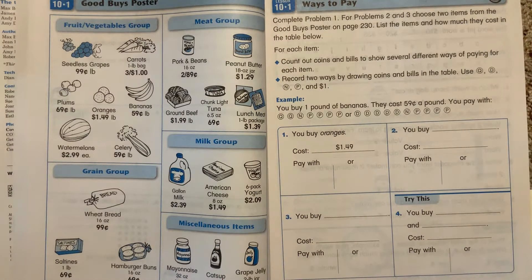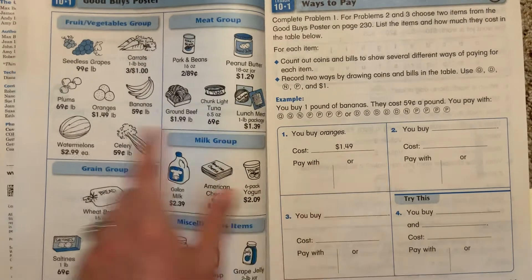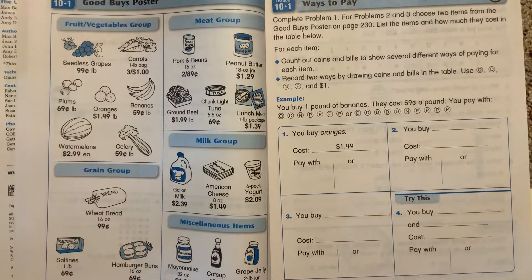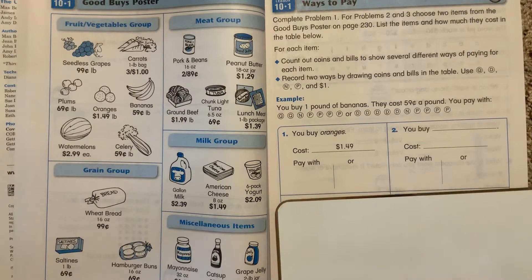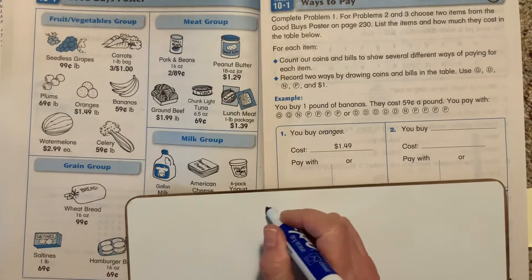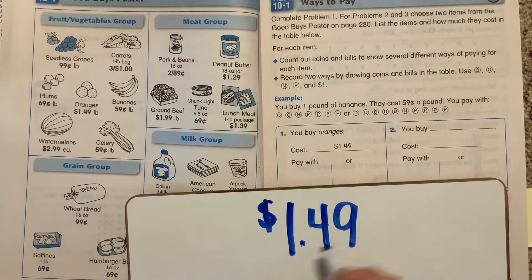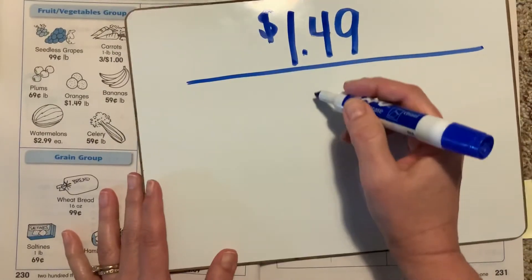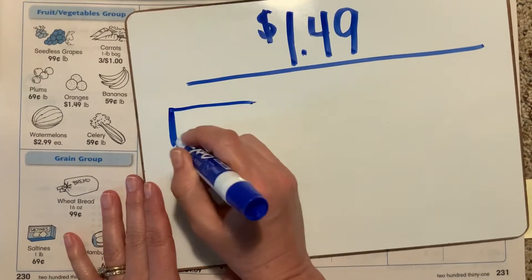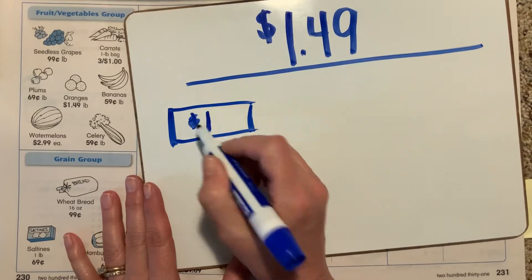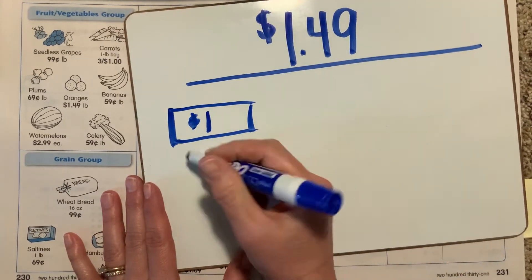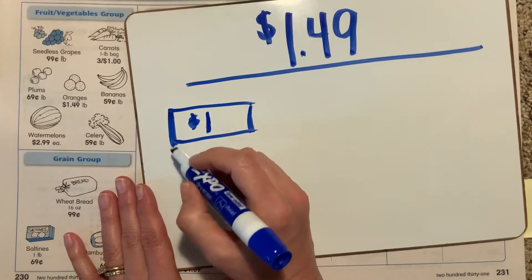Number one says we're buying oranges at $1.49 — so we must be buying exactly one pound of oranges. How could we pay for those oranges? We can use quarters, dimes, nickels, pennies, and dollar bills. I'm going to pay $1.49 two different ways. The first way, I'd probably start with a dollar bill, then add $0.25.